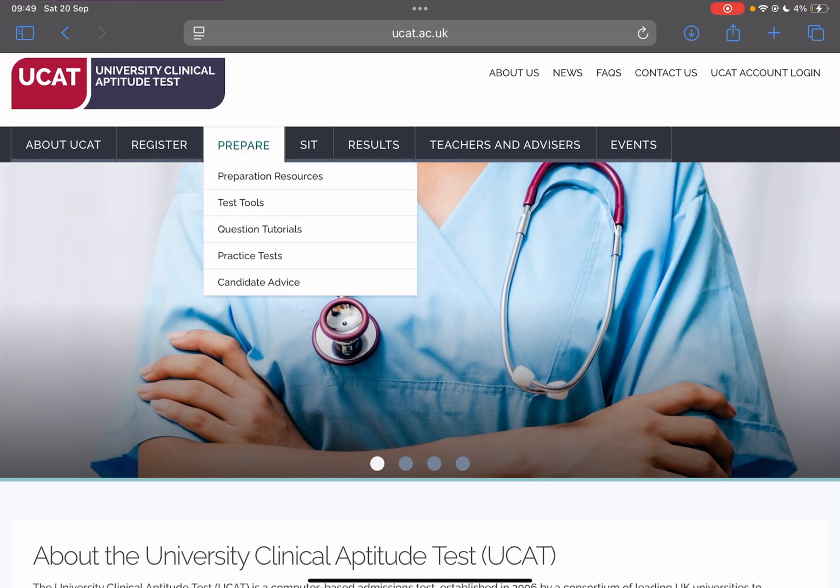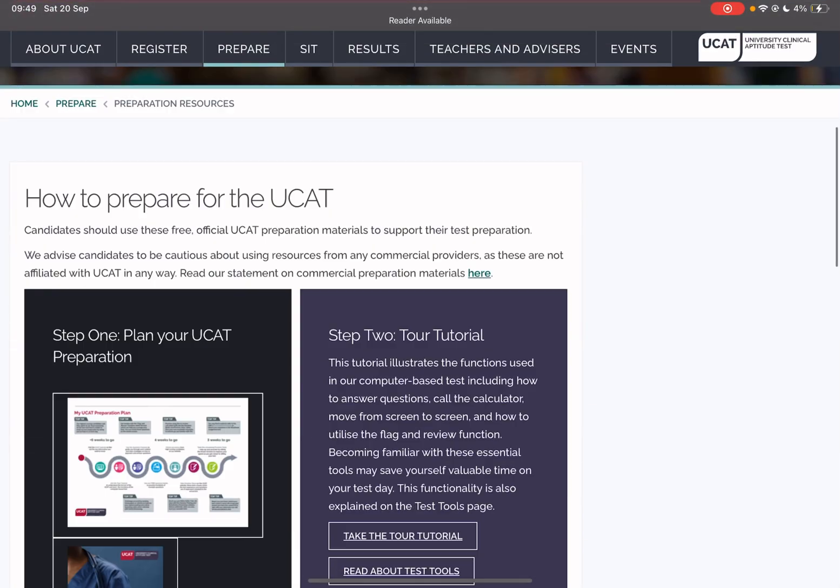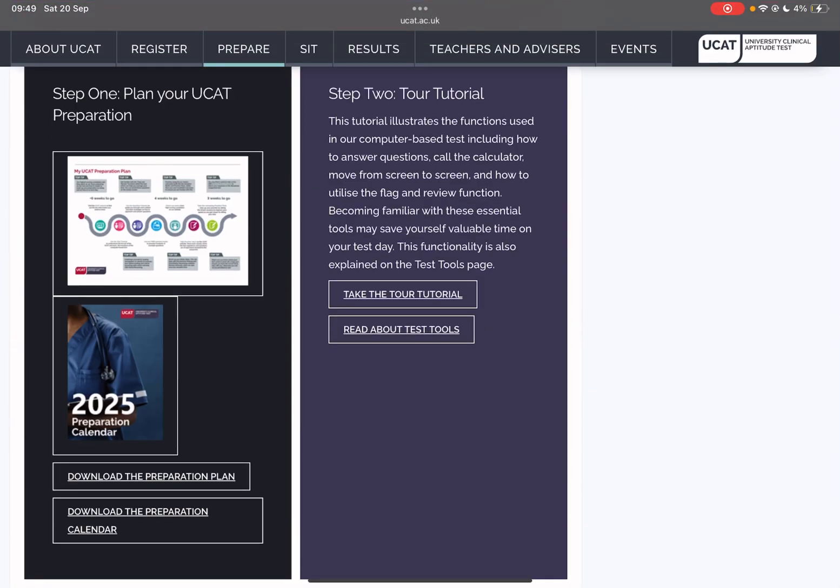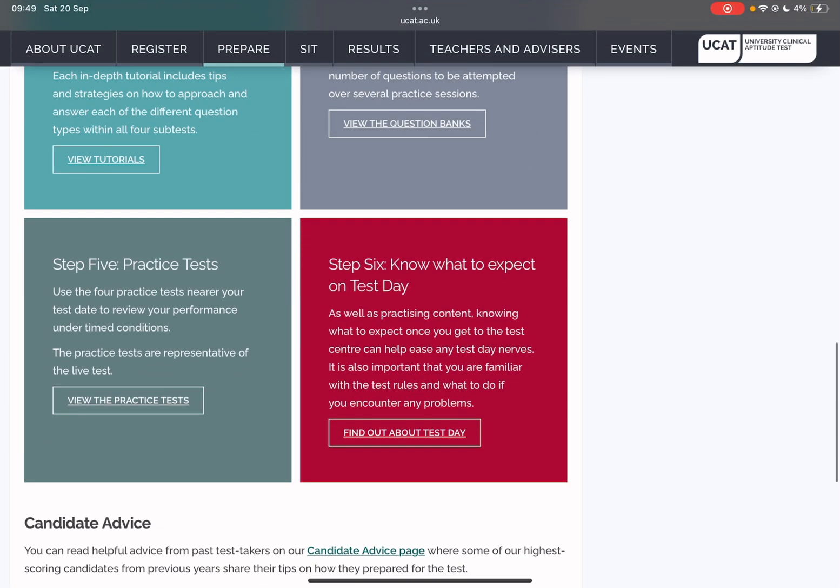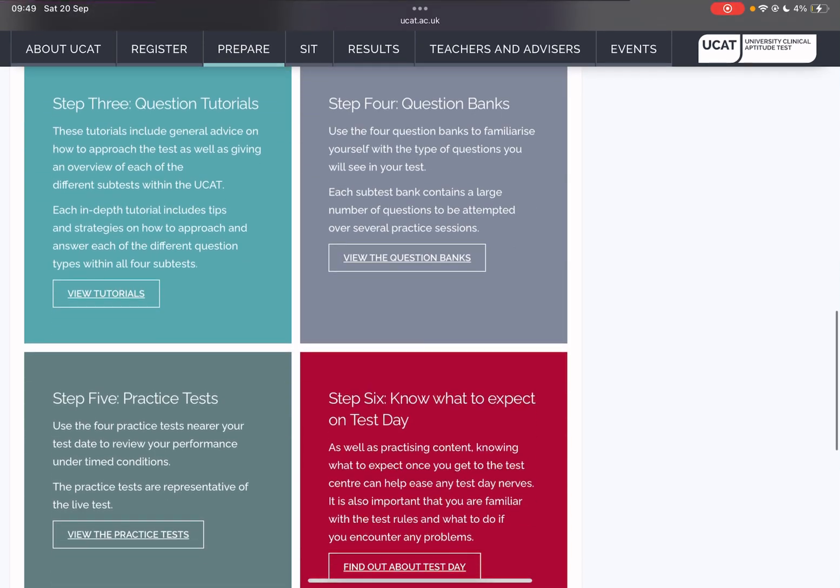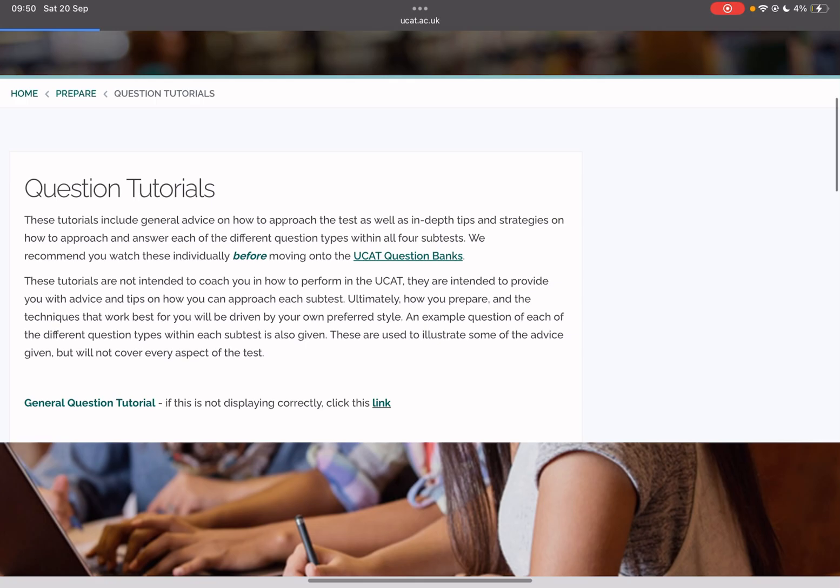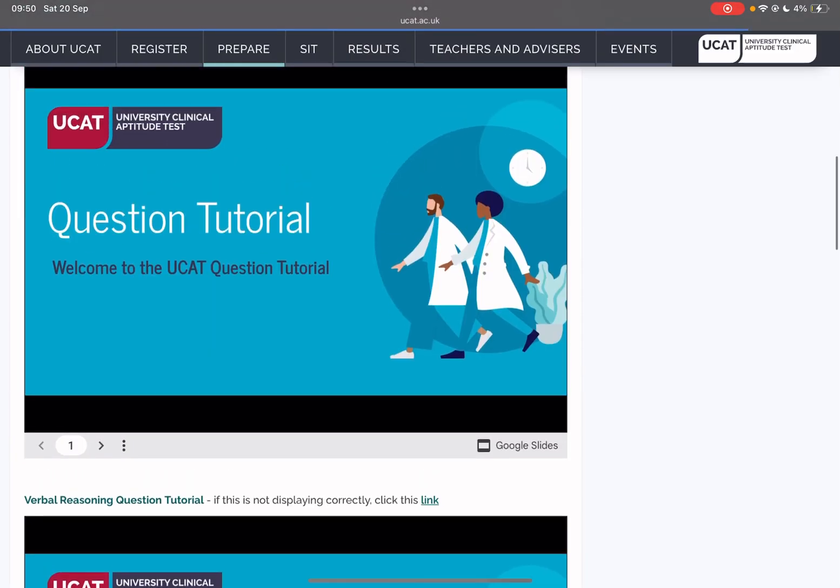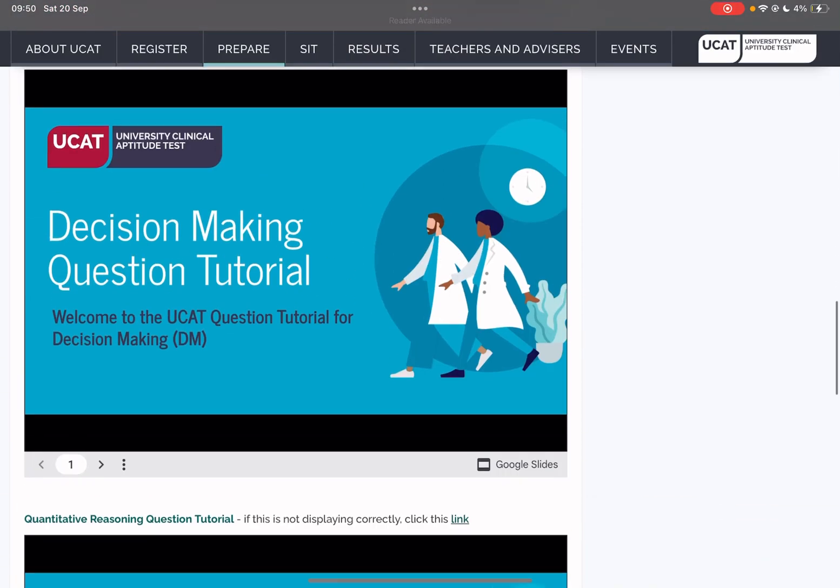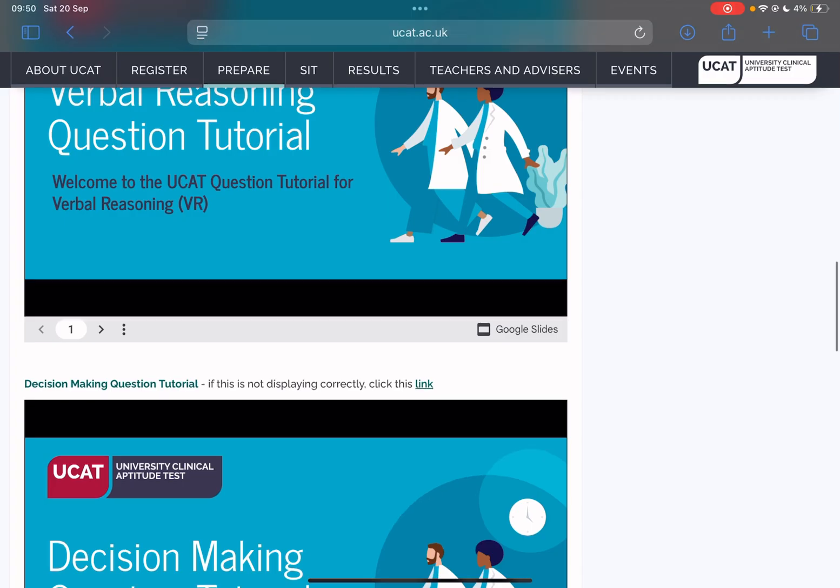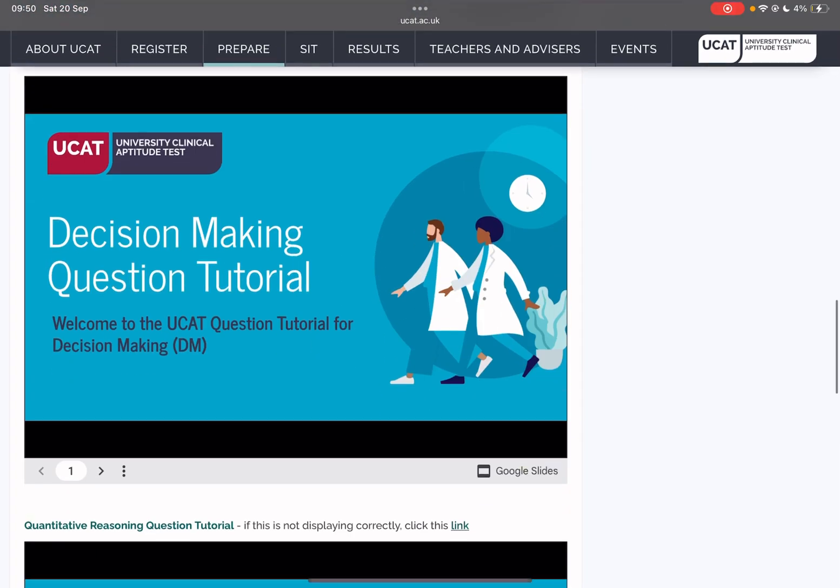If you go to the official UCAT website, go to prepare, preparation resources, scroll down. A lot of you guys will be familiar with the question banks and practice tests, but may not have clicked on the question tutorials aspect. If you scroll down, go to decision making.